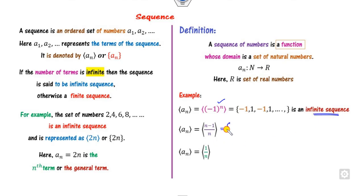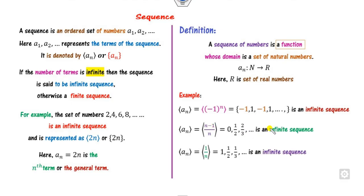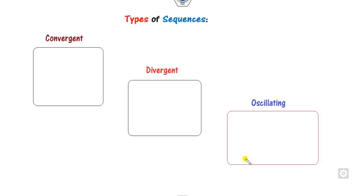Similarly, for another example here, when you take n equal to 1, the value is 0. If you take n equal to 2, it will be 1/2, and so on. So this is again an infinite sequence. This sequence is basically divided into three categories: convergent sequence, divergent sequence, and oscillating sequence.